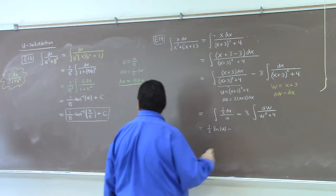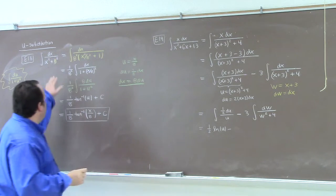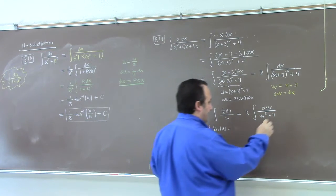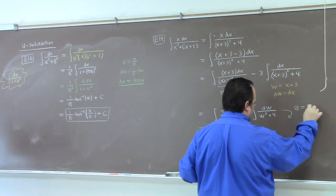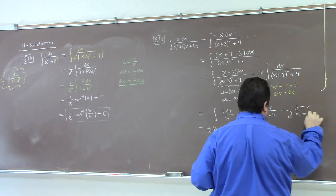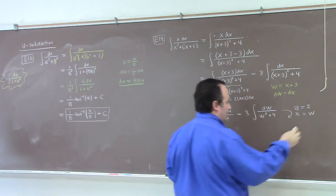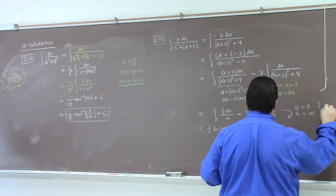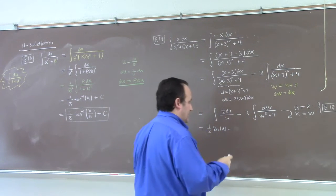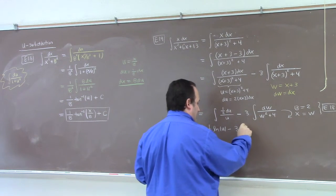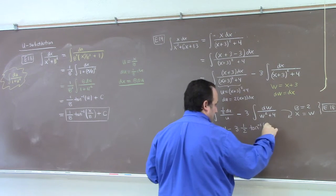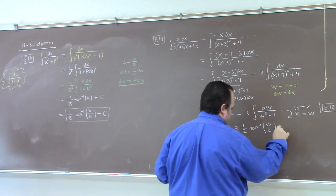I've got to follow. So here, what we're looking at is b equals 2, right? b equals 2. And x equals w, right? For example 18. So I've got minus 3 times 1 half inverse tangent of w over 2 plus a constant.